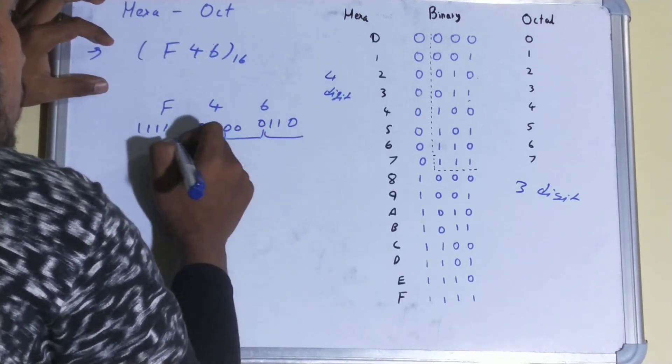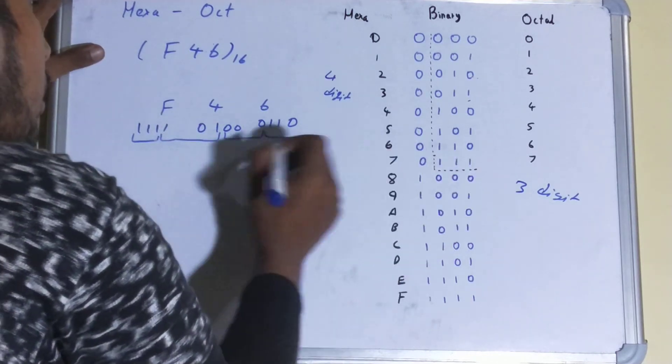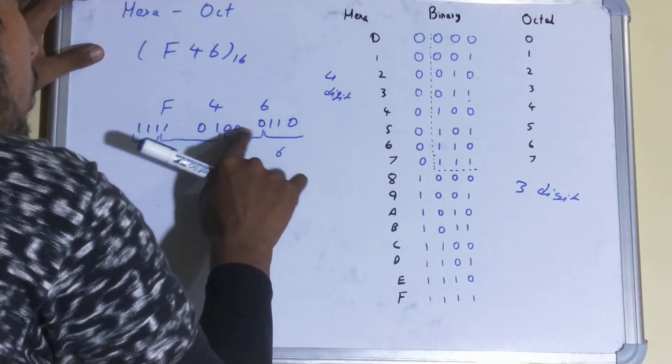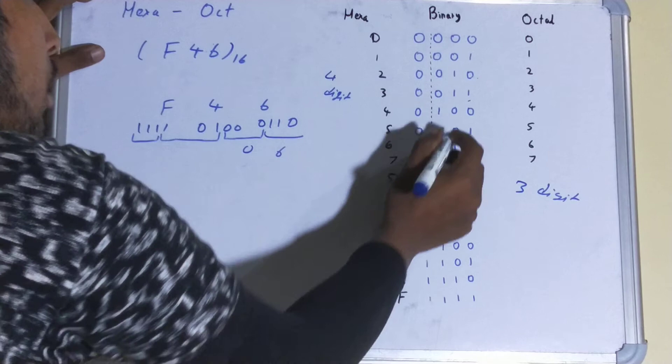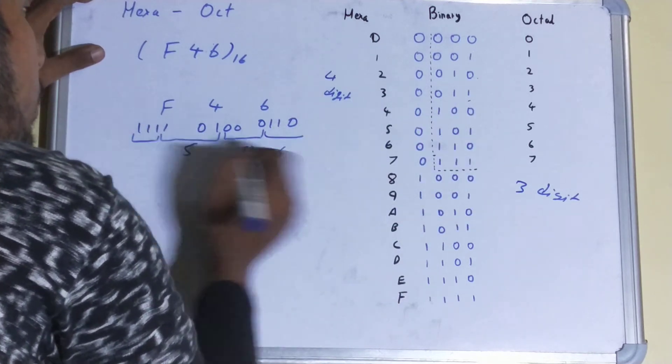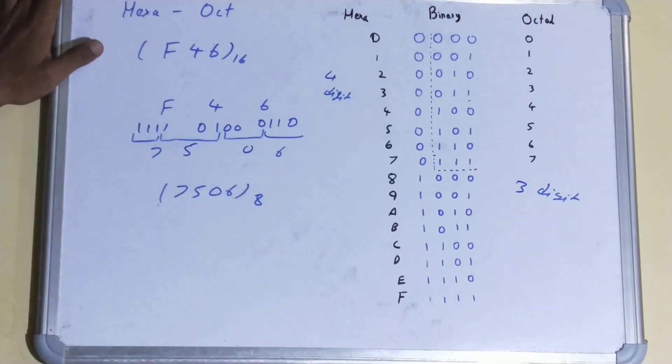Here you can see, so one one zero will be six, then your zero zero zero will be your zero only, one zero one will be five, and three times one will be seven. So it will be seven five zero six base eight. This is how you will be finding from hexadecimal to your octal representation.